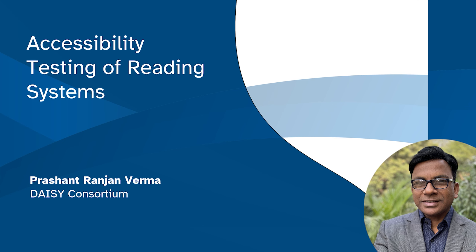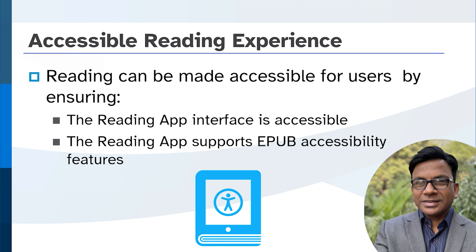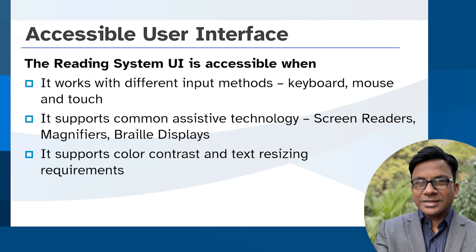Hello. I'm Prashant Ranjan Verma, accessibility specialist for DAISY Consortium. I will be talking about accessibility testing of reading systems. Reading systems can be made accessible for all users by ensuring that the reading app interface is accessible and that the reading app supports EPUB accessibility features. The reading system UI — which could be a native app for Windows, Android, iOS, or similar, or a web app that works within the browser — is accessible when it works with different input methods like keyboard, mouse, and touch, and when it supports common assistive technology like screen readers, magnifiers, and braille displays. The accessible UI should also support color contrast and text resizing requirements.